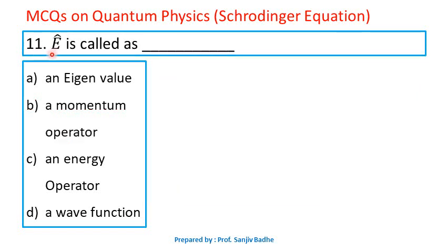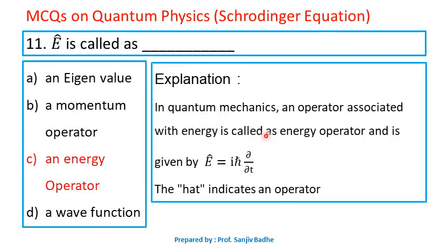Question number 11. Ê is called — options are an eigenvalue, a momentum operator, an energy operator, or a wave function. Ê is called an energy operator, given by Ê = iℏ ∂/∂t. The hat again indicates an operator. So option C is correct — Ê is called an energy operator.